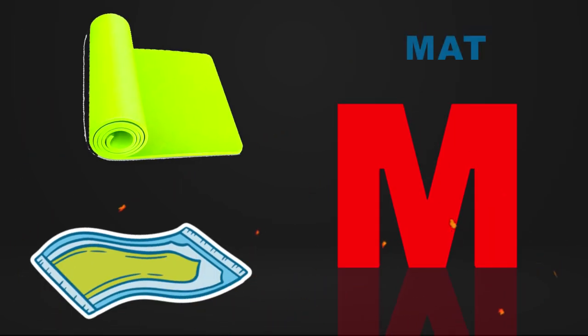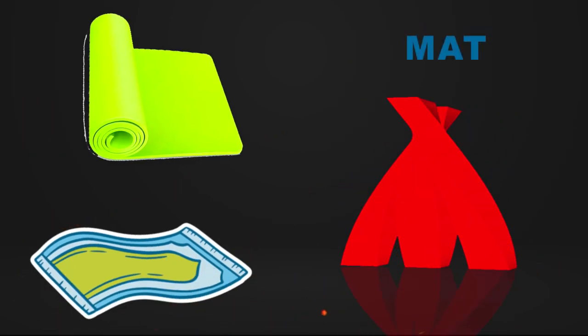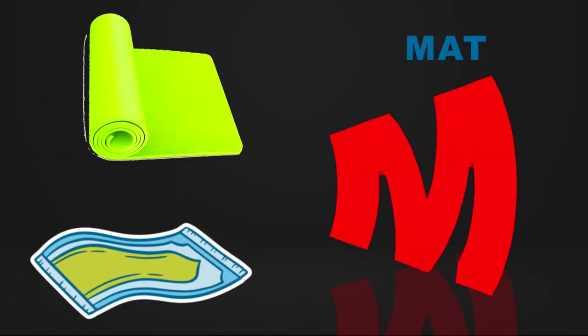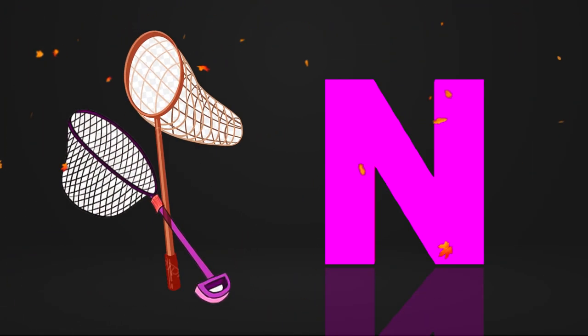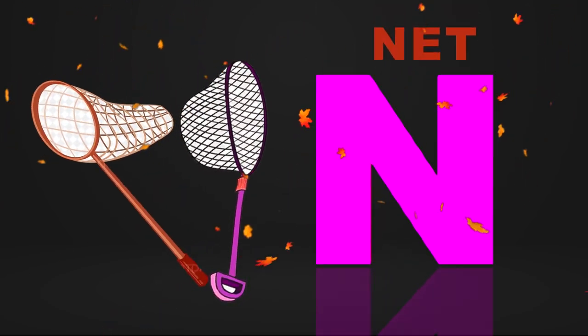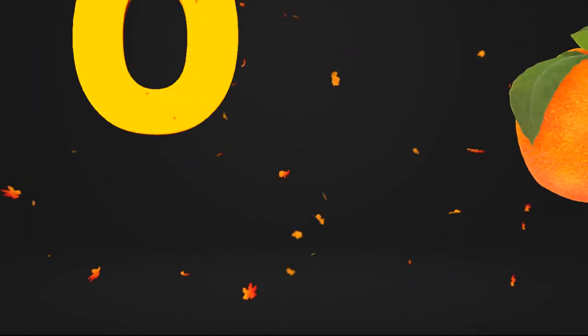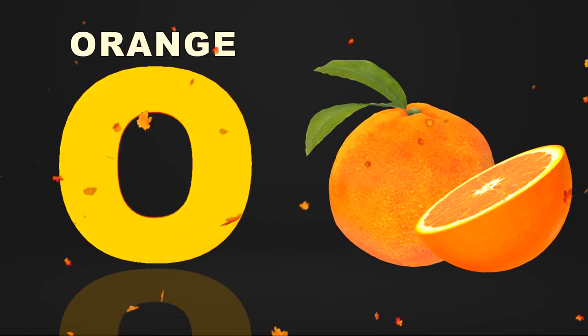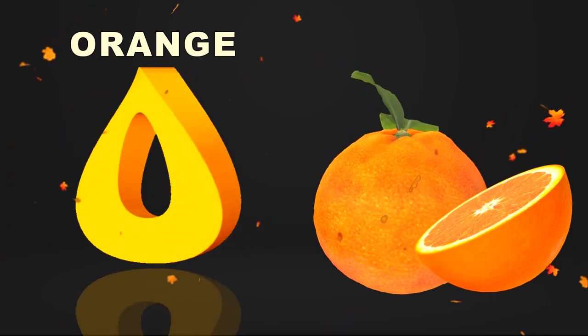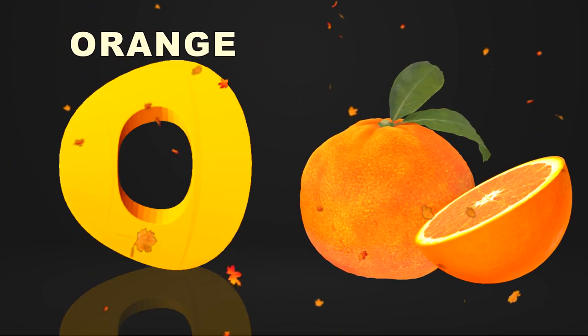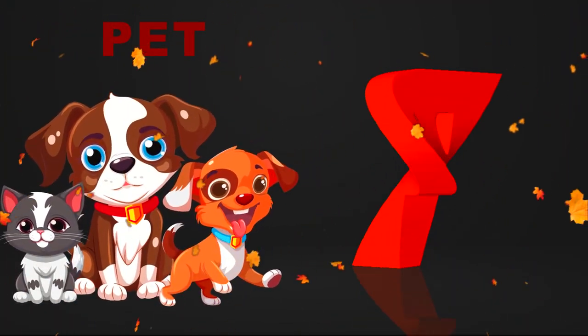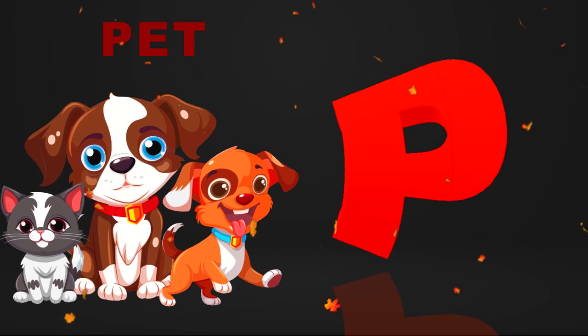M is for mat, m-m-mat. N is for net, n-n-net. O is for orange, o-o-orange. P is for pet, p-p-pet.